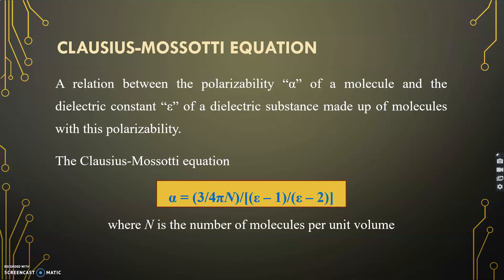The Clausius-Mossotti equation is given as shown here, where polarizability alpha equals 3 by 4 pi N, where N is the number of molecules per unit volume, divided by epsilon minus 1 into epsilon minus 2.